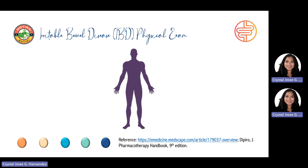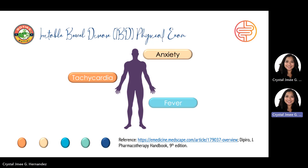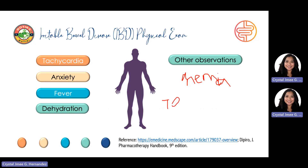On physical examination of patients with IBD, the following can be observed: patients can manifest tachycardia, anxiety, fever, dehydration, and other observations may include anemia and pallor. Toxic megacolon can also happen — remember that toxic megacolon is a medical emergency. Patients would appear septic, manifesting with high fever, lethargy, chills, and tachycardia. They may have increasing abdominal pain, tenderness, and distension.